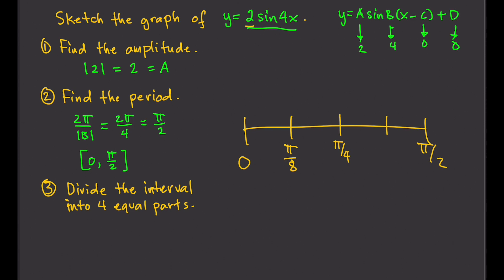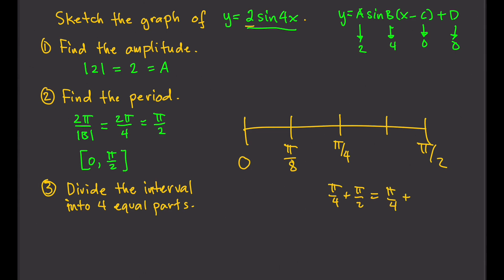The remaining number is just the average of π/4 and π/2. So, π/4 plus π/2 — we can write π/2 as 2π/4 — gives us 3π/4. That's the sum, but we divide by 2 because we're taking the average, so that gives us 3π/8. Now our table is complete, and our key points are: 0, π/8, π/4, 3π/8, and π/2.